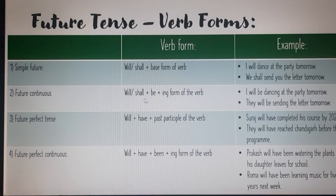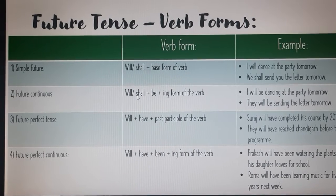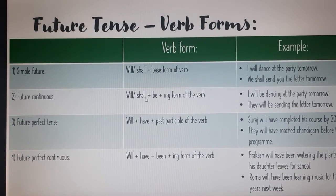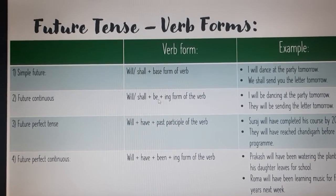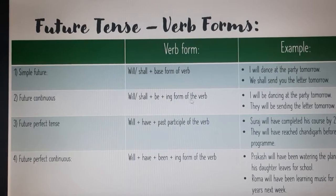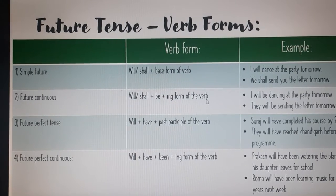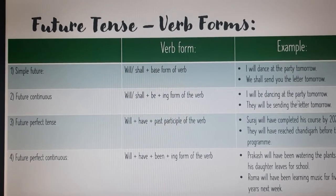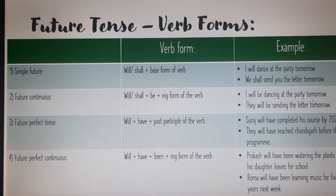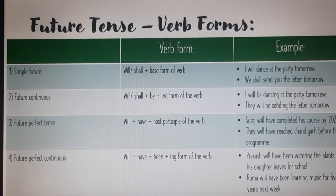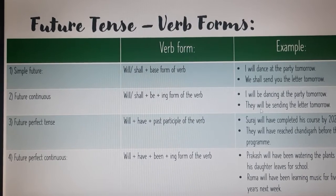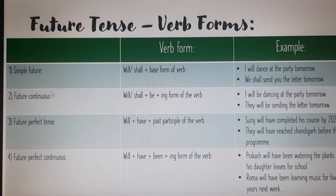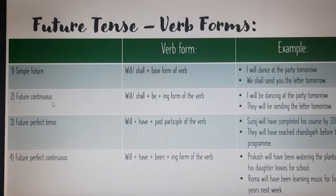The next one is future continuous. With this, 'will' or 'shall' plus 'be' plus the '-ing' form of the verb is used. For example: 'I will be dancing at the party tomorrow' or 'They will be sending the letter tomorrow.' This is future continuous.